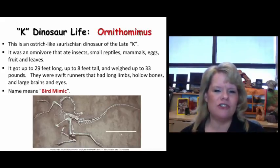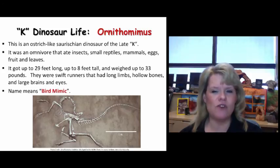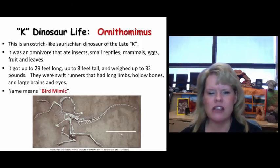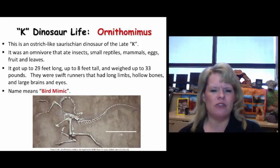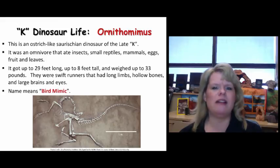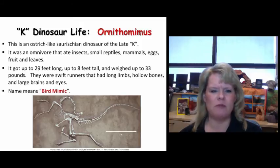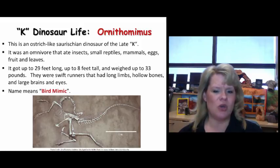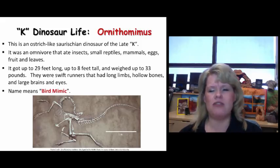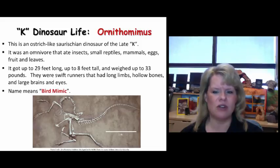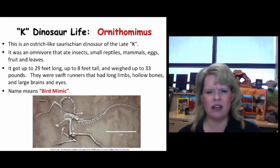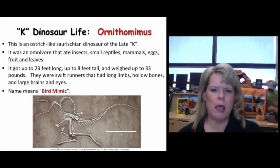Ornithomimus is an interesting ostrich-like dinosaur from the late Cretaceous. It was an omnivore — since it's a theropod and Cerachian, you'd expect it to eat meat, and it probably also ate plants based on tooth morphology. It got up to 29 feet long, about eight feet tall, and weighed up to about 33 pounds — your typical-sized theropod with hollow bones, fast and agile. Its name means bird mimic.